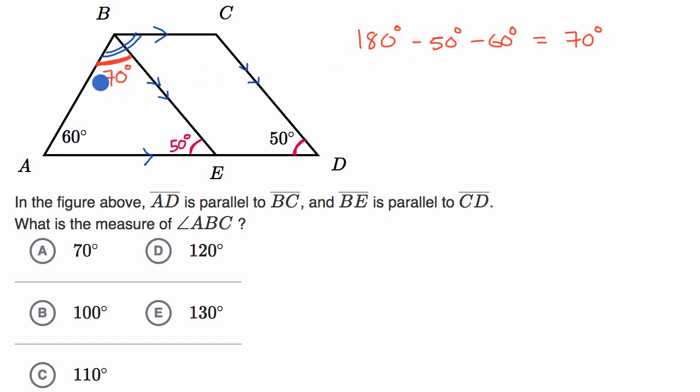So we're getting close. We figured out that angle ABE is 70 degrees, but we still have to figure out angle EBC. Because if we can figure out this angle right over here, EBC, then we add that to what we just figured out to figure out ABC.